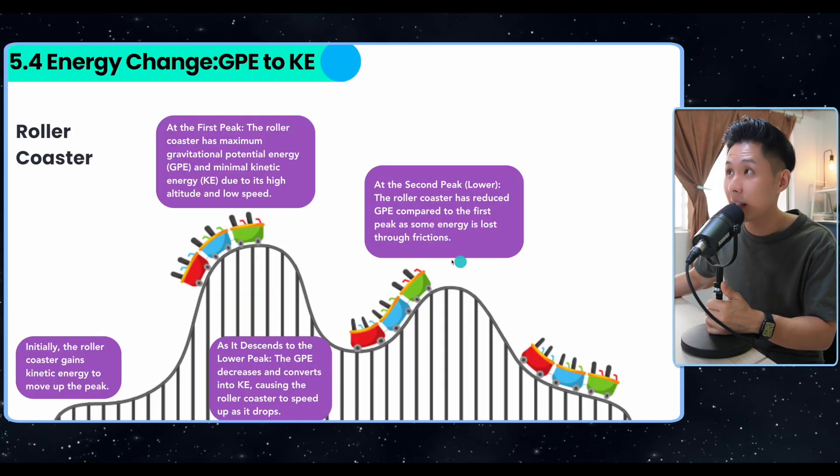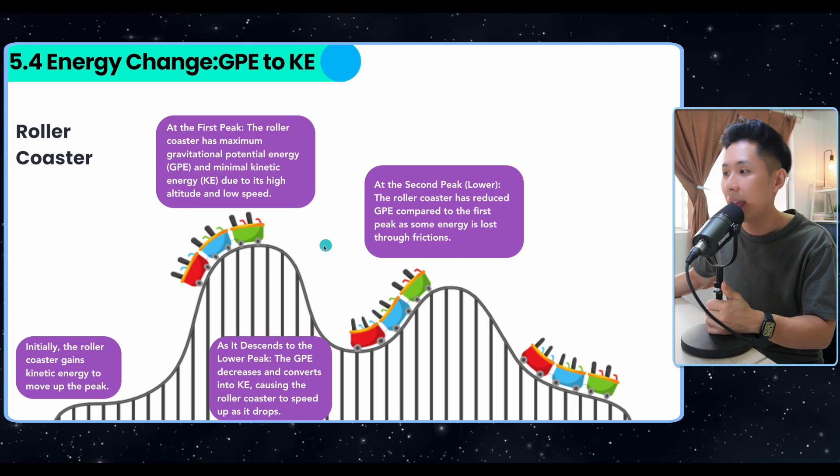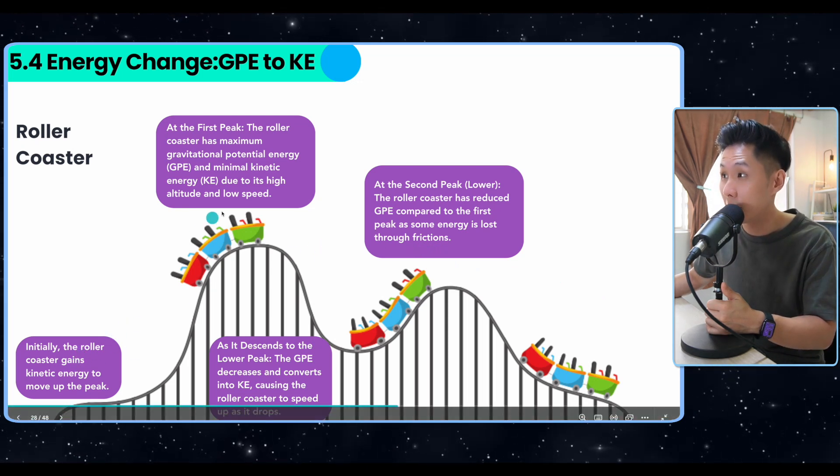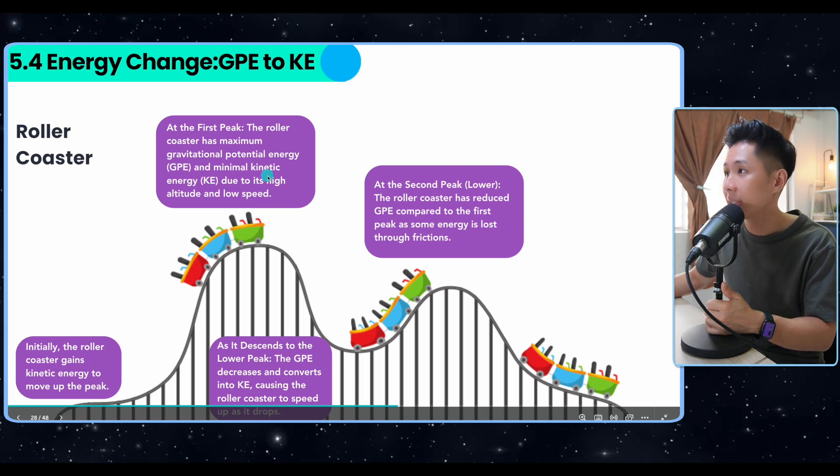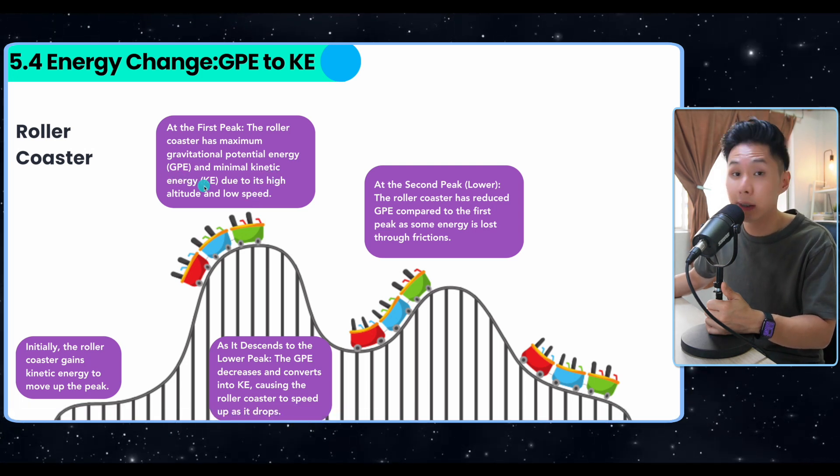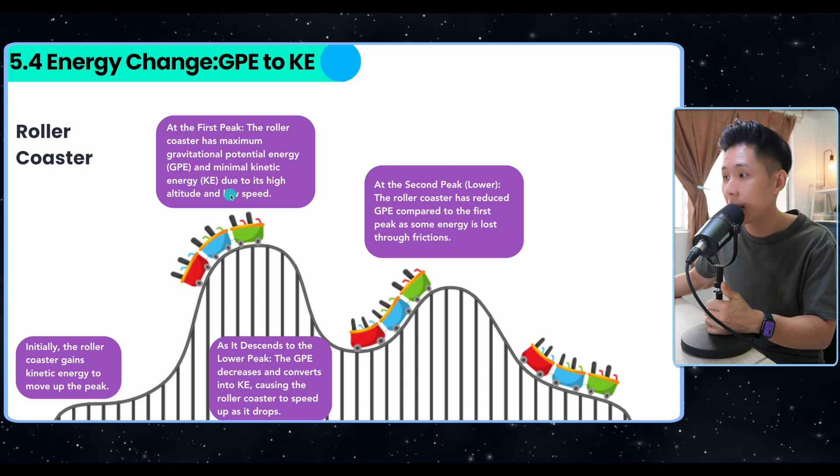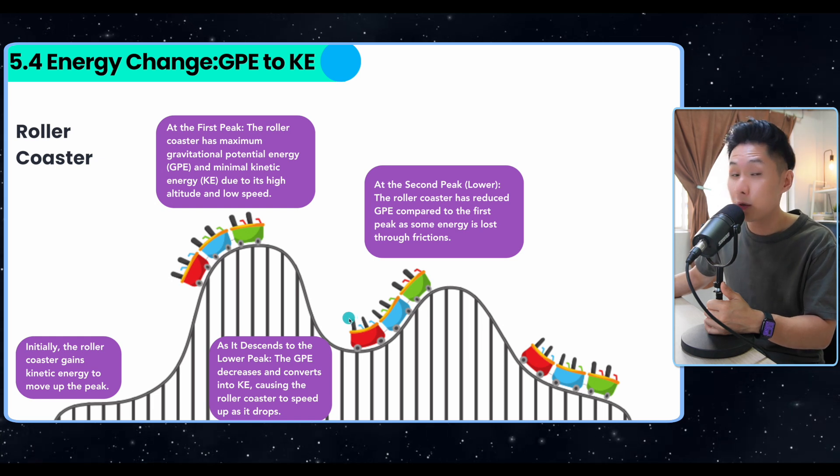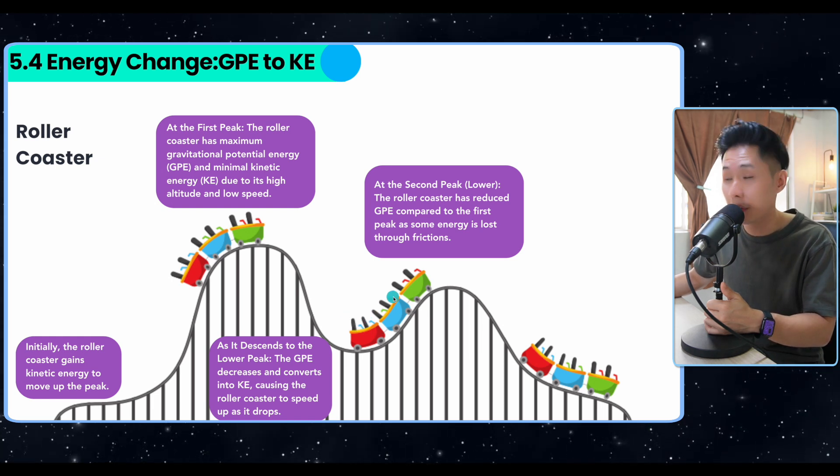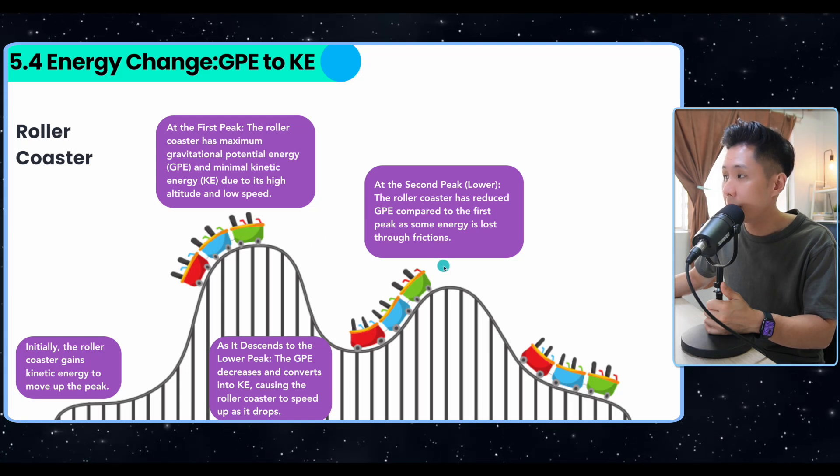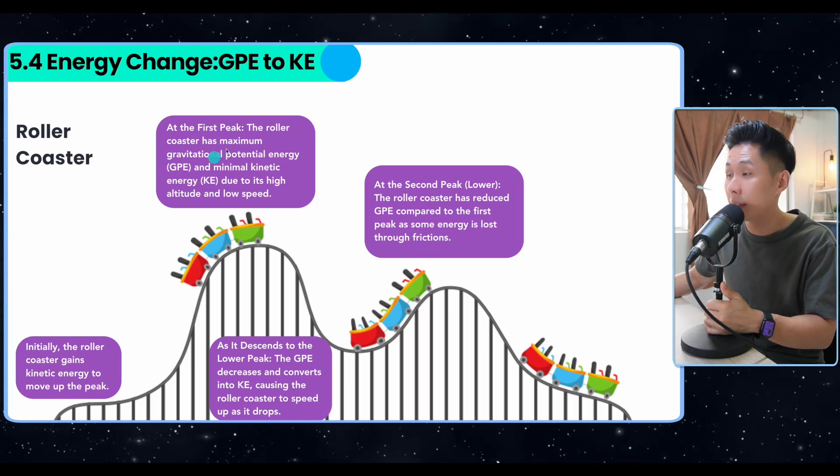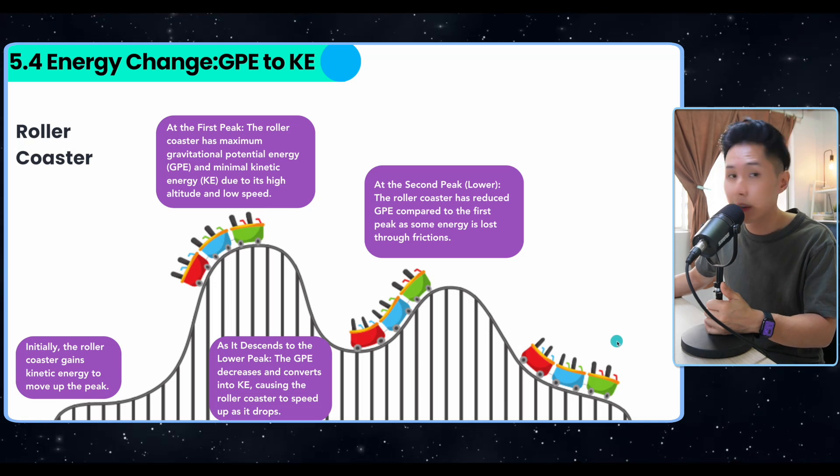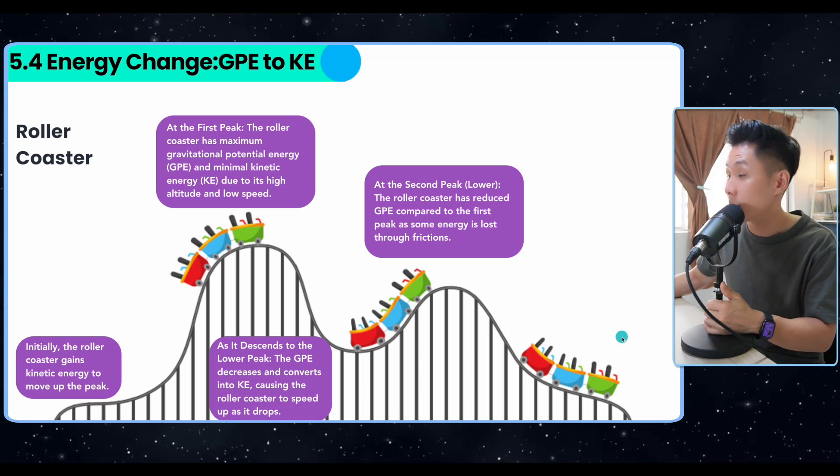So this slide here showcases how GPE can be changed to kinetic energy and back to GPE again. So initially, the roller coaster gained kinetic energy and moved up the peak after launch. And as they are at the peak, GPE is the highest, kinetic energy is the lowest because it's not moving. And as it descends, GPE will decrease because height decreases. And this energy is converted to kinetic energy to make them move. But as they reach the second peak, the GPE will now be lower than that of the first peak, because some energy has been lost through friction. And eventually, they will just slow down and slow down, and the ride will stop.